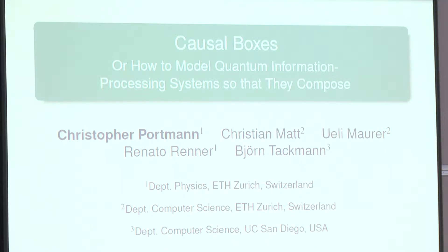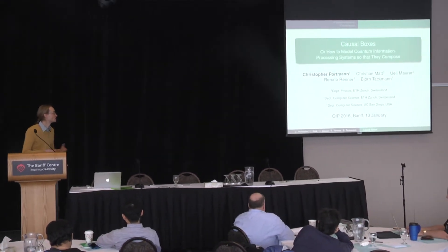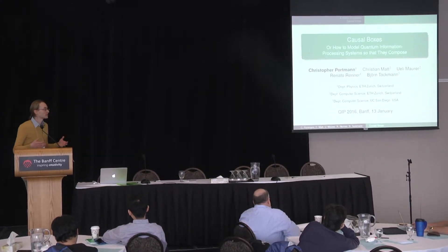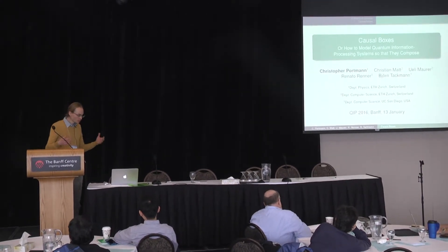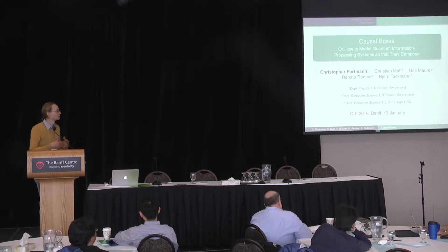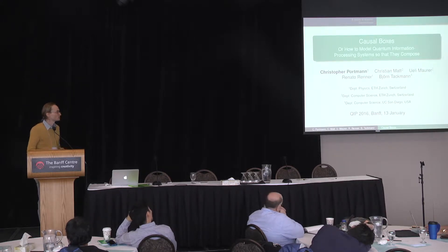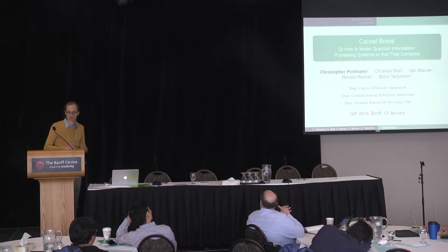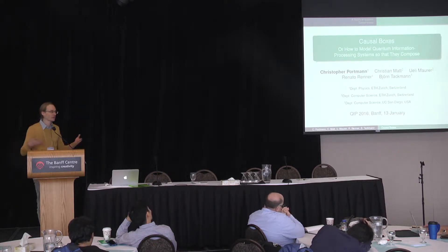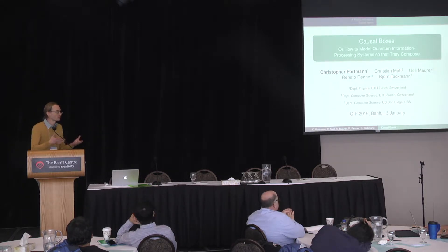The topic is how to model quantum information processing systems so that they compose. The main keyword is quantum information processing systems — any system which receives quantum states and sends quantum states. For example, the strategy of a player in a multiplayer game, or a protocol in a cryptographic setting — any complex system which sends and receives quantum states and has memory. We want to model this mathematically, and in particular, we want these objects to compose. If one system talks to another, you connect the two together: the outputs of one become inputs of the other, and we should end up with something valid.